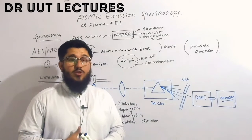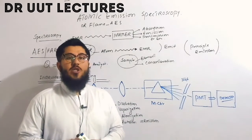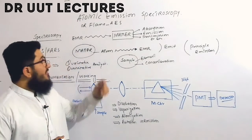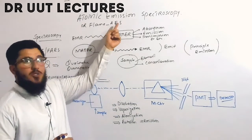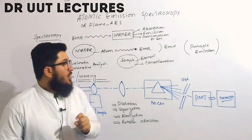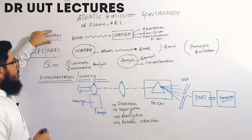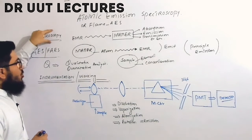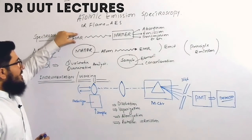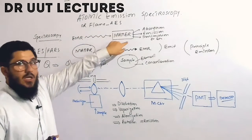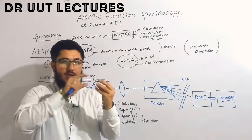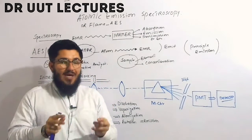In this lecture we will talk about atomic emission spectroscopy, which is also known as flame atomic emission spectroscopy. Before we move towards the explanation, we must know what spectroscopy is. Spectroscopy is actually the interaction of electromagnetic radiation with matter — when electromagnetic radiation interacts with matter, this is called spectroscopy.